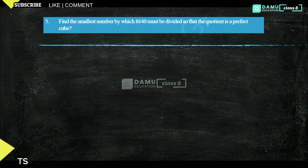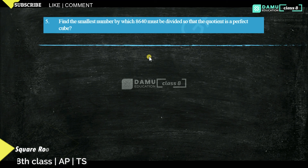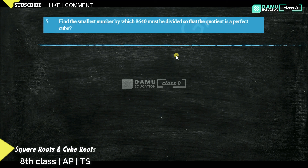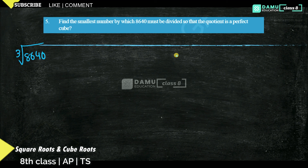Our next question is: find the smallest number by which 8,640 must be divided so that the quotient is a perfect cube. Whether it is multiplication or division, first of all we have to check if the cube root of 8,640 is a perfect cube or not.